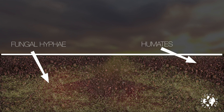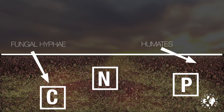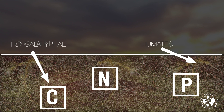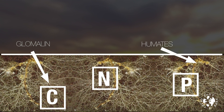In a healthy soil there are 25,000 kilometers of fungal tentacles called hyphae in every cubic meter, helping to fix carbon and stabilize nutrients like nitrogen and phosphorus. As the fungi move on they leave behind something called glomalin. Humates and glomalin then combine to create the glue that aggregates the soil and keeps it spongy and absorbent — nature's perfect strategy to fix carbon and keep nutrients cycling rapidly through the system.